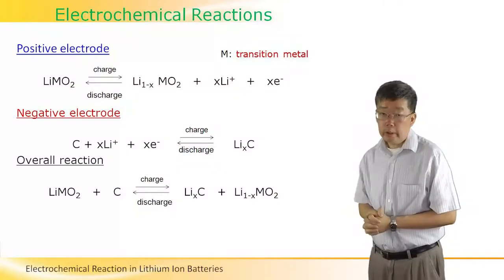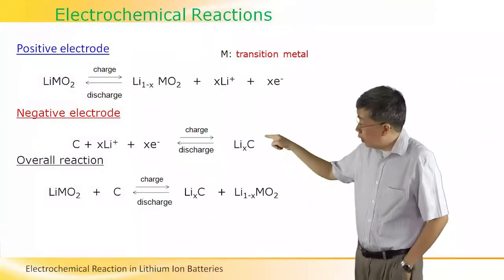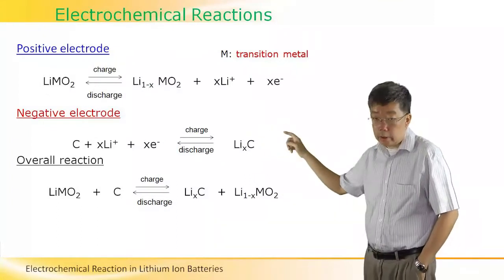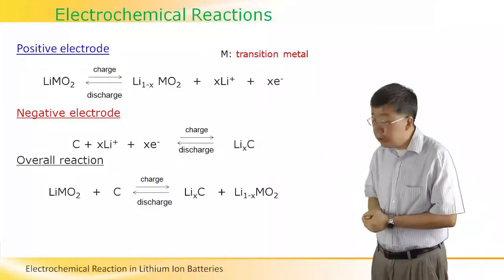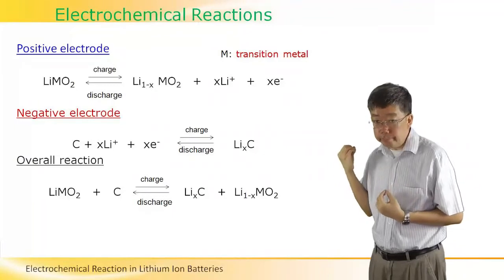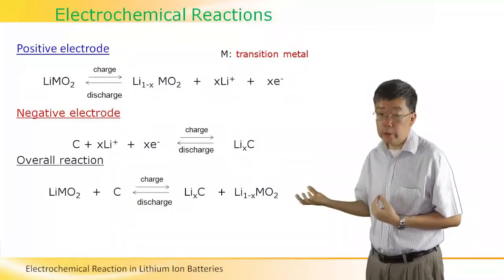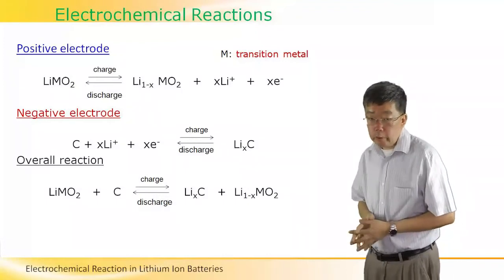On the positive electrode, we can see that the chemical reactions have double arrows, which shows that this type of battery is a secondary battery so it can be charged and discharged. We first look at the discharge of the lithium-ion battery.